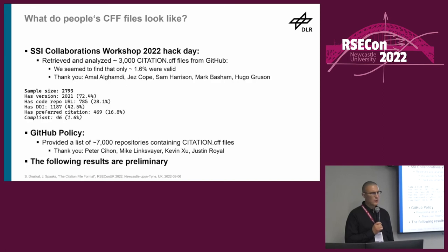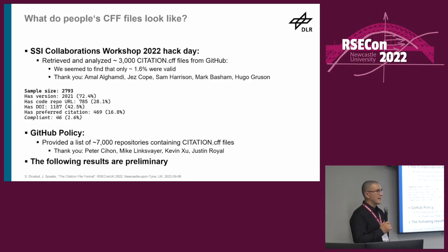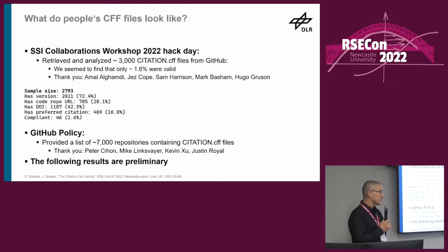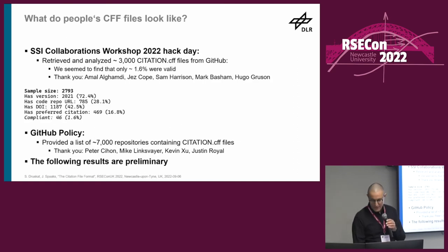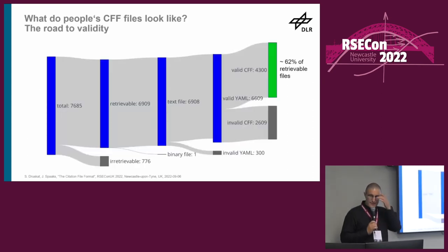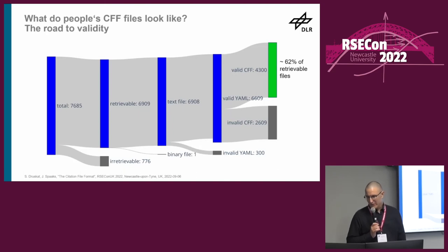That 1.6% made me suspicious - I think we had a different idea of what 'compliant' actually means. I think we looked at compliance with the software citation principles, and software publication to achieve that is really hard. We're trying to change that in a different project called Hermes - we're running a workshop tomorrow if you're interested. Then Dan Katz introduced me to some people at GitHub Policy and they gave me 7,000 URLs for CFF files. So I deduplicated these URLs, built a corpus, and ran some analyses. As an Australian rock band said, it's a long way to the shop if you want a sausage roll - this is the long and stony road to validity of CFF files.